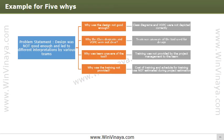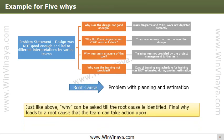Then ask: why was the team not provided with training? The reason may be poor planning and estimation, which did not have a schedule or budget for training. This helps in arriving at the root cause. Most of the time, five whys is sufficient, however, sometimes more than five or even fewer than five iterations are enough.